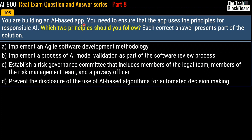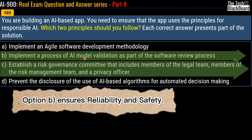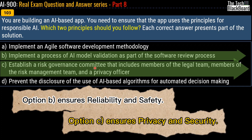Question 103: You are building an AI-based app and need to ensure it uses the principles for responsible AI. Which two principles should you follow? The correct answers are option B and option C. Option B — implementing a process of AI model validation — ensures reliability and safety. Option C — establishing a risk governance committee including members from legal, risk management, and a privacy officer — secures the privacy and security principle of responsible AI.